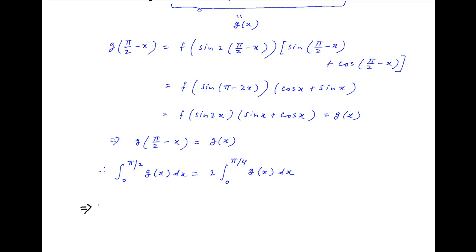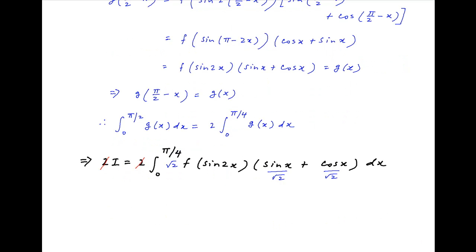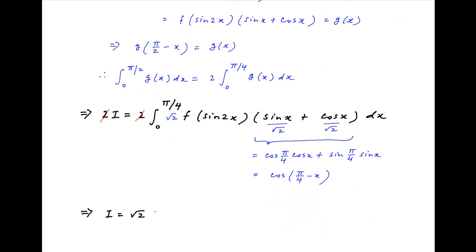Using this result, the value of 2I equals 2 times integral 0 to π/4 of f of sine 2x multiplied by (sine x plus cos x) dx. Now multiply and divide the integrand on the right hand side by root 2. Since sin x over root 2 plus cos x over root 2 equals cos(π/4)cos x plus sin(π/4)sin x, this equals cos(π/4 minus x). Therefore, I equals root 2 multiplied by integral 0 to π/4 of f of sine 2x times cos(π/4 minus x) dx.